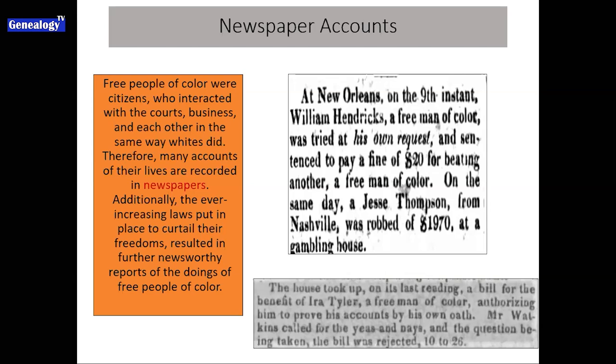If you have a Newspapers.com account, or if you're using Chronicling America, or whatever newspaper site you're using, put in quotes 'free man of color' — you're going to get thousands of articles. Put 'free woman of color' — thousands of articles. Put 'free person of color' — thousands of articles. Just interesting reading, and then you can narrow it down by location.